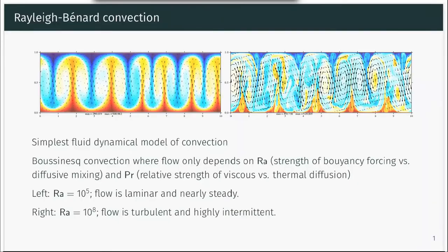Dan Shipley has been simulating Rayleigh-Benard convection using the single and two-fluid Boussinesq equations. Rayleigh-Benard convection is the simplest fluid dynamical model of convection. The heat transported by the convection depends only on the Rayleigh number, which is the relative strength of the buoyancy forcing to the diffusive mixing and on the Prandtl number.